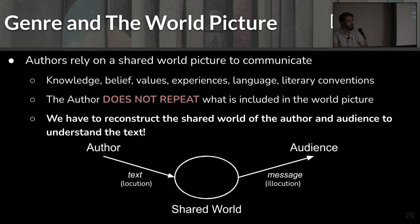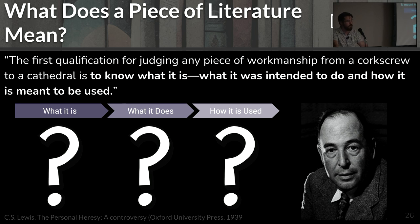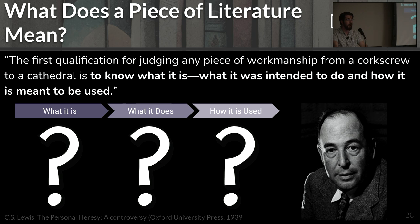How are we supposed to know what the author intended? C.S. Lewis says the first qualification for judging any piece of workmanship, from a corkscrew to a cathedral, is to know what it is, what it was intended to do, and how it is meant to be used. Those are the three questions you ask when coming to a text: What is this text? What does it do — what was it intended to do? And how is it intended to be used? For example, with the Old Rock story, we know what it is — it's a fun pep-rally type thing — and it's intended to hype people up.